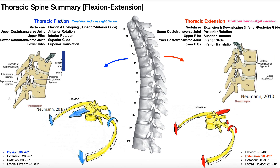So if you think about these movements: in thoracic flexion there's less space, so the ribs are going to approximate. In extension there's more space, so they're going to separate. You can reason through these movements if you remember the upper joints are going to be rotation and the lower joints are translation. For thoracic extension, the typical passive range of motion is at least 20 to 25 degrees. And just like exhalation induces slight flexion, inhalation induces slight extension of the T-spine. This does not mean extension causes inhalation — the diaphragm contracting causes inhalation. But when you inhale, it does induce a slight amount of thoracic extension.